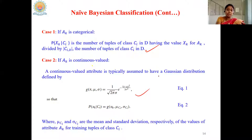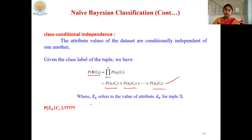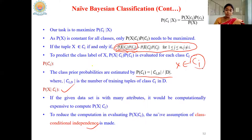How to calculate each individual P(Xk|Ci) depends on the type of the attribute. If the attribute is categorical, we use Case 1 formula. If the attribute is numerical, we use Case 2 formula, which is based on the mean and standard deviation of the attribute. Once we get each P(Xk|Ci), we can multiply them to get P(X|Ci), and combined with P(Ci), we substitute into the condition. If the total value for Ci is higher than the other classes, we conclude that X belongs to Ci.